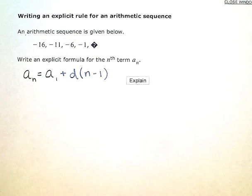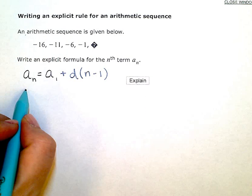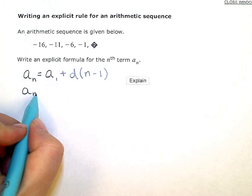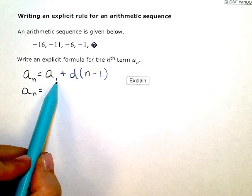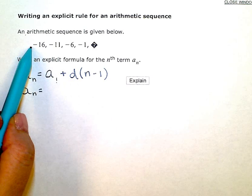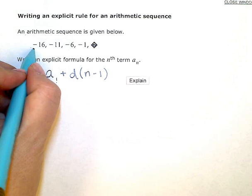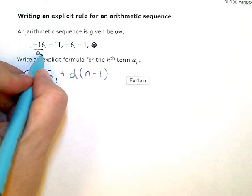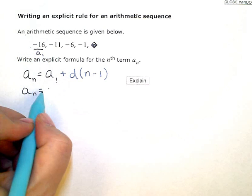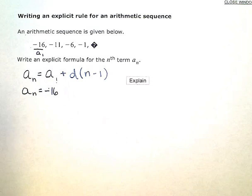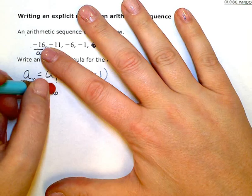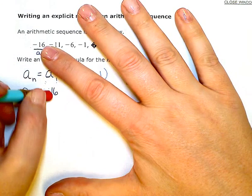So then I just need to fill in the values. So for a sub n, a sub 1 or my first term is negative 16. This one right here is a sub 1. So I'm going to put negative 16. Get rid of that extra little dot I made there.